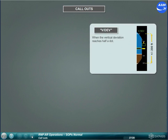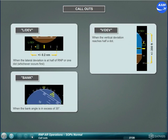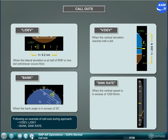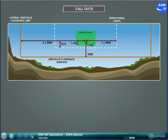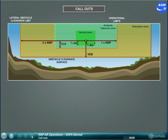Following is an example of call-outs during approach: VDEV, LDEV, Bank, Sink rate. Normal zone: within call-out limits — monitoring LDEV and VDEV. Analysis/take-over zone: between call-out limits and operational limit — take appropriate actions to reduce deviations or go-around if the trend clearly indicates the operational limit will be exceeded. Extraction zone: outside operational limit — initiate a go-around with the most appropriate escape maneuver.